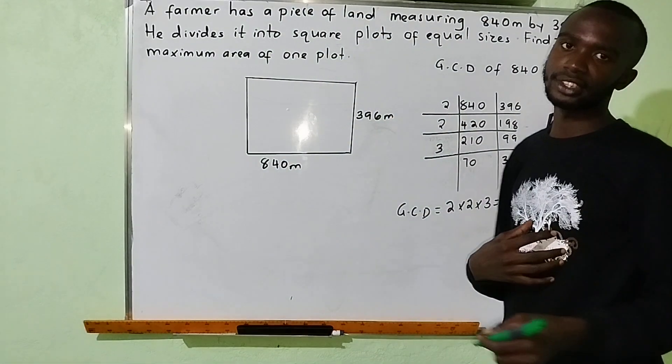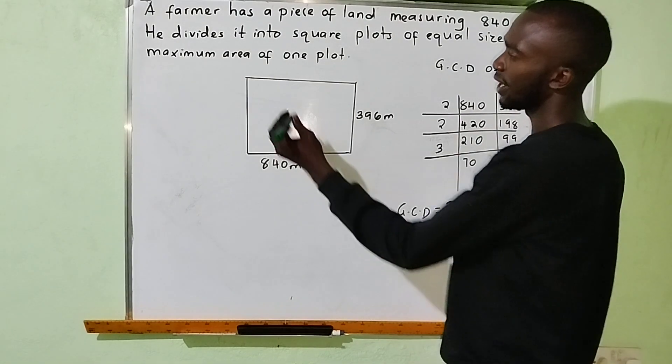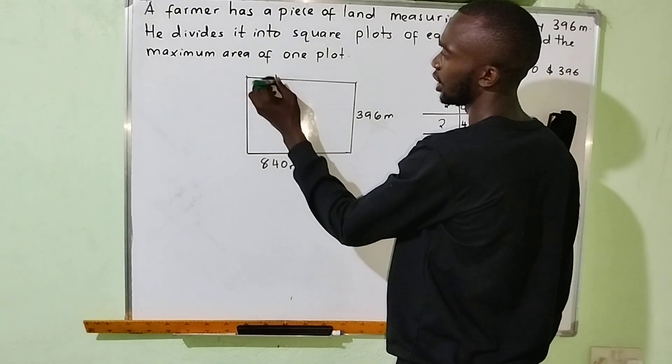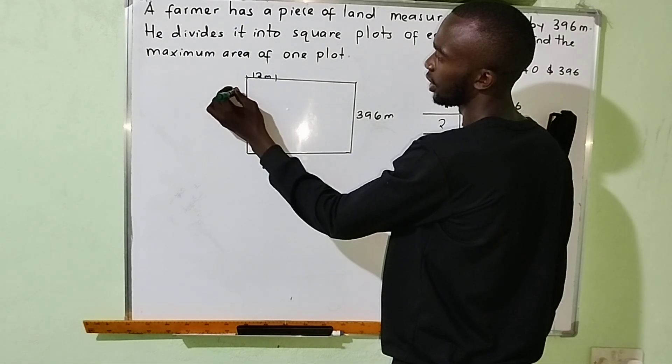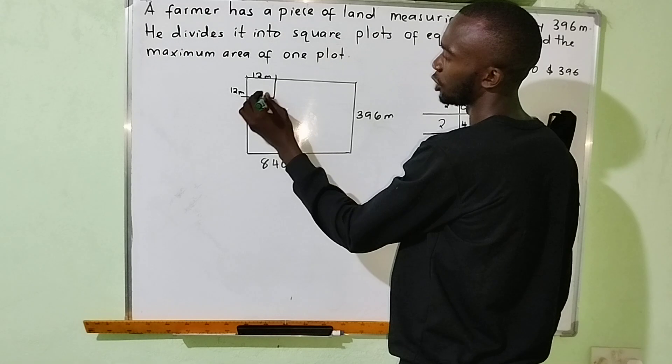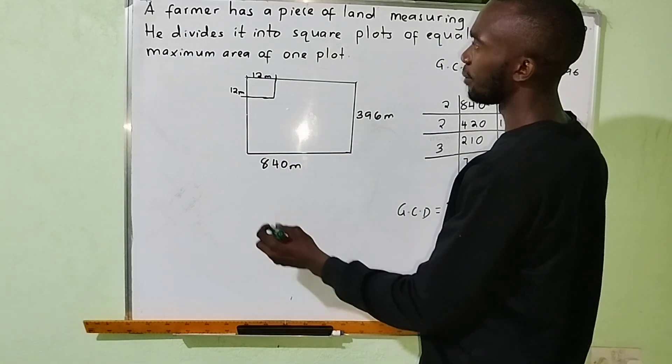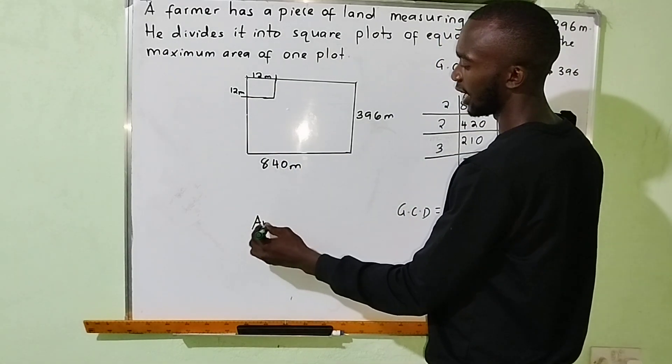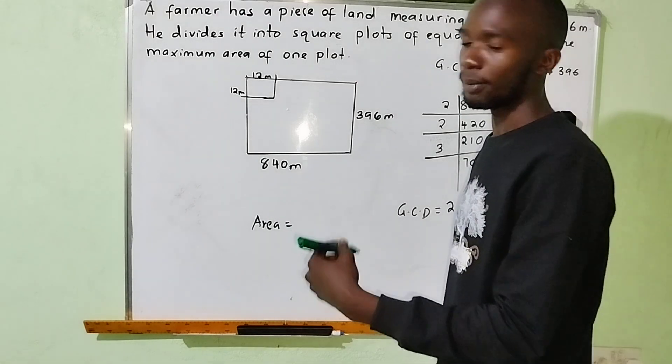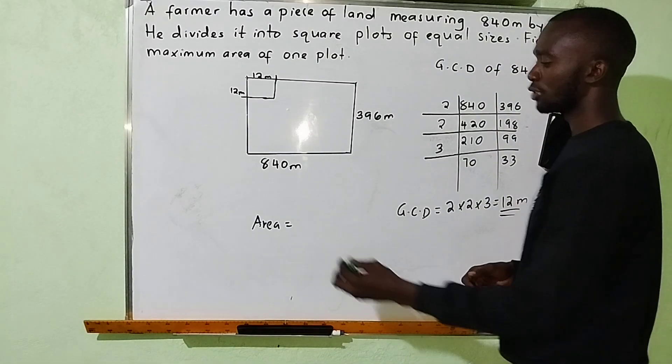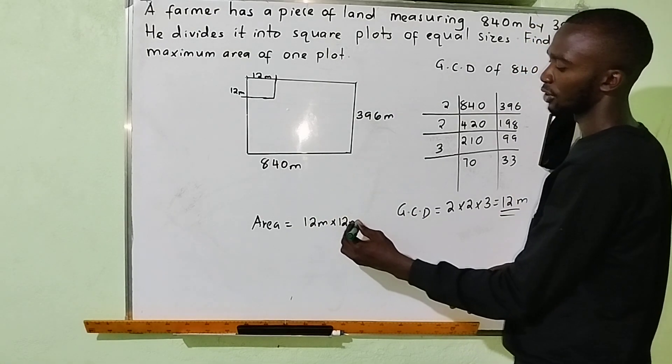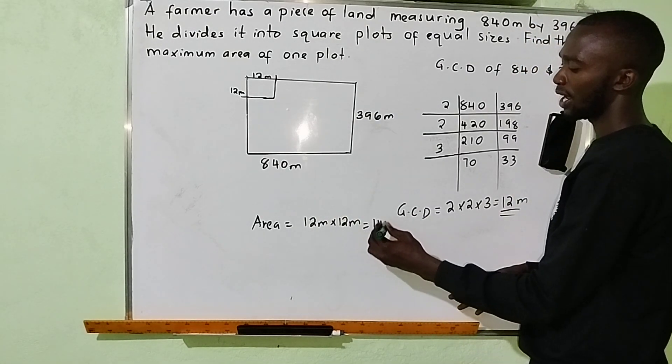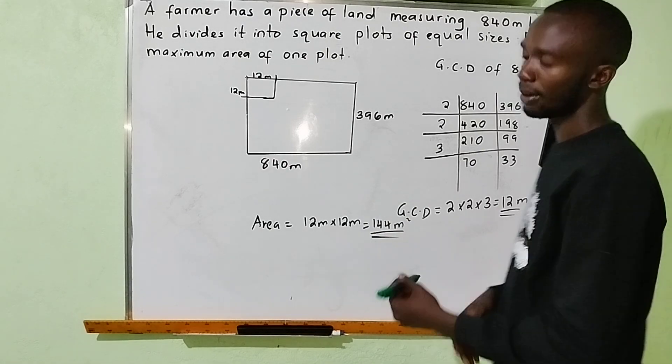If we have a length of 12 meters on one side and another 12 meters on the other side, that means you have a square plot of 12 by 12. So now the maximum area is the area of that square plot which measures 12 by 12. So it is 12 meters multiplied by 12 meters. The maximum area is 144 square meters.